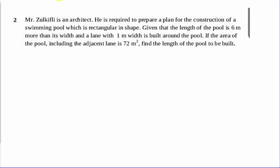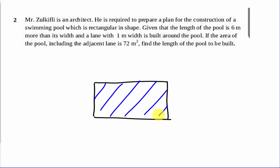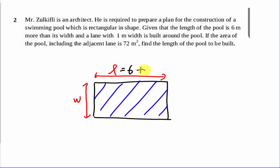Based on the question, I'll draw my pool. This is the pool, and the question gives us information: the length of the pool is six meters more than its width. I'll call the width w. So the length will be w plus six meters — that's what the question is saying.